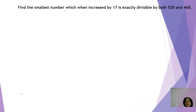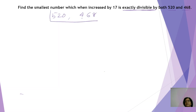Let's take the first one. Find the smallest number which when increased by 17 is exactly divisible by both 520 and 468. That means the number we're supposed to find out is exactly divisible by both these numbers. These words will tell us whether we need to find the LCM or the HCF. If the number is divisible by both these numbers, it must be greater than either of them and must be a multiple of both. So we need to find the LCM of 520 and 468, and then see what has to be done with 17 in the question.